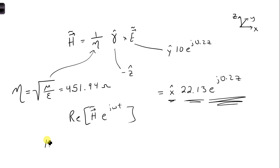And so we're going to get h of z, t is x hat 22.13. And we're going to get cosine. I'm going to put omega t. Omega we calculated in just the previous part. That's 3 times 10 to the 7th t. And then we have 0.2z. And this is milliamps per meter.